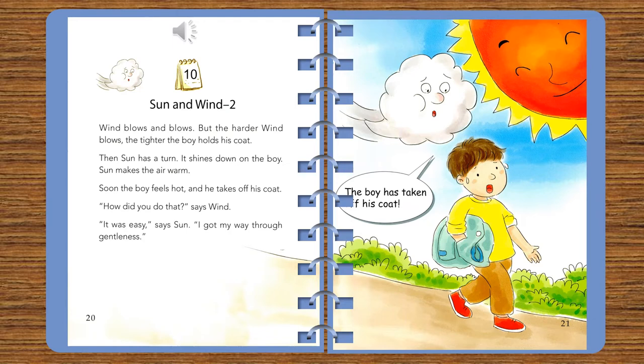How did you do that? says Wind. It was easy, says Sun. I got my way through gentleness. The boy has taken off his coat.